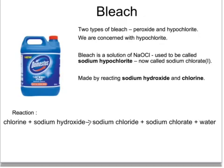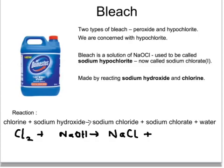The formula for chlorine is Cl₂, and that for sodium hydroxide is NaOH. The products are sodium chloride, NaCl, and water, H₂O. In order to balance the equation — to have two sodiums on each side — we need to put 2NaOH.